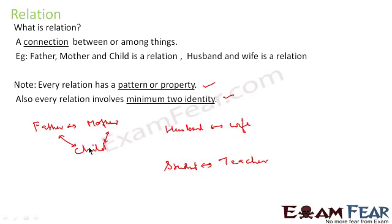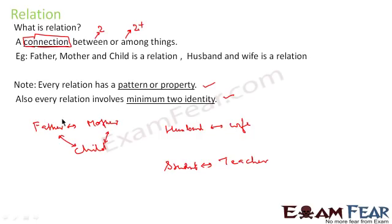Father and mother take care of the child. Similarly, husband and wife together build their family. To reiterate: relation is nothing but a connection between or among things. When it involves two objects, we say 'between.' When it involves more than two objects, we say 'among.' For example, father, mother, and child is a relationship among three people, while husband and wife is a relationship between two.